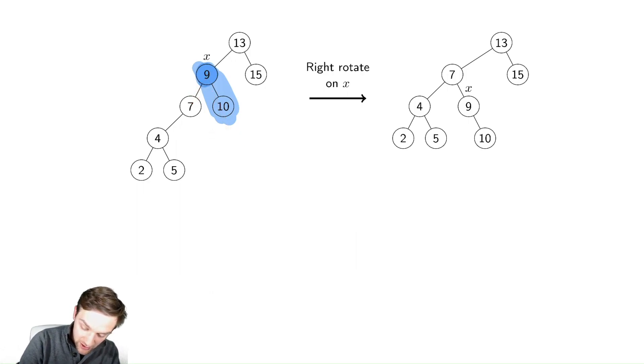If we look, that edge between seven and nine gets swung down to the right of seven instead. We are rotating that edge downwards and to the right, or clockwise if you want to think about it that way. This is a right rotation on x. You are moving that node downwards in the tree.